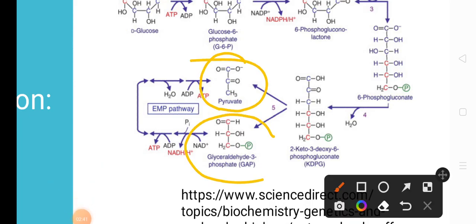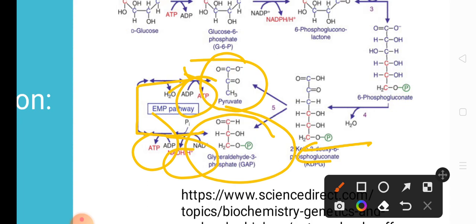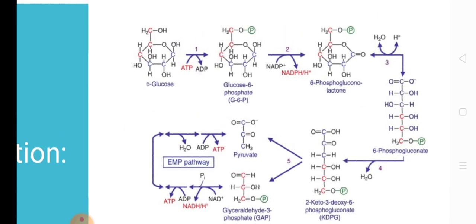With the help of the enzyme 2-keto-3-deoxy glucose-6-phosphate aldolase, KDPG is cleaved into two products: pyruvate and glyceraldehyde-3-phosphate. The glyceraldehyde-3-phosphate then enters glycolysis, producing two ATP molecules, one NADH, and ultimately pyruvate. That is how, through this alternative pathway, glucose is converted into pyruvate.